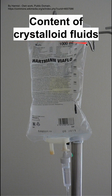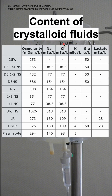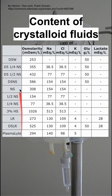This is the content of crystalloid fluids. There are a number of crystalloid fluids that you can give a patient, listed along the left here, and these are some details about them. The first column is the osmolarity, which helps you know if the crystalloid fluid is hypertonic, isotonic, or hypotonic. The remaining columns show electrolyte concentrations, and lastly, lactate and glucose.